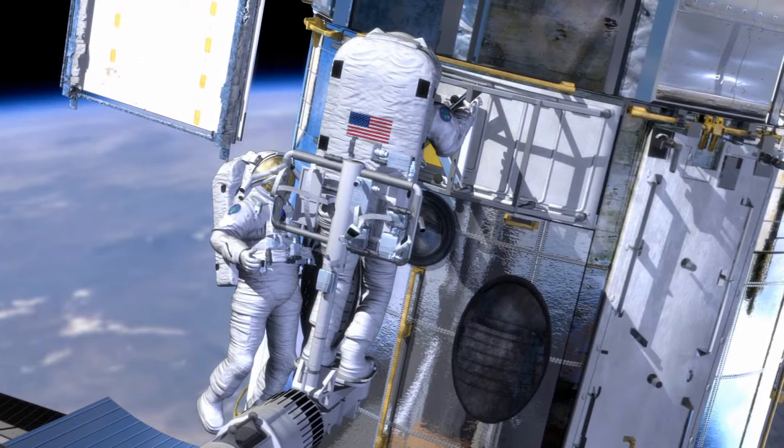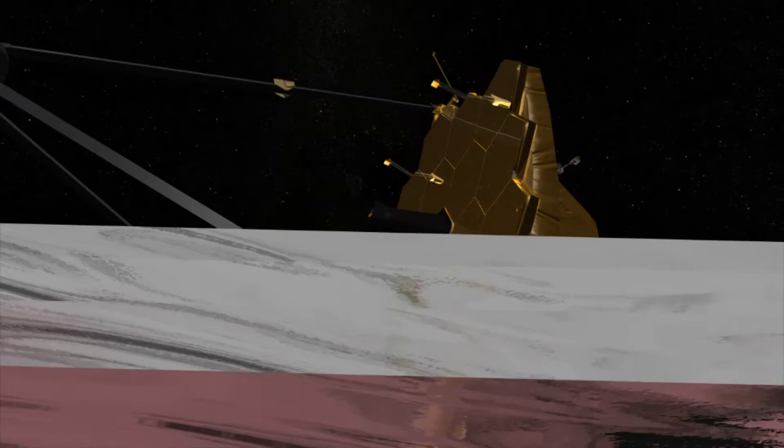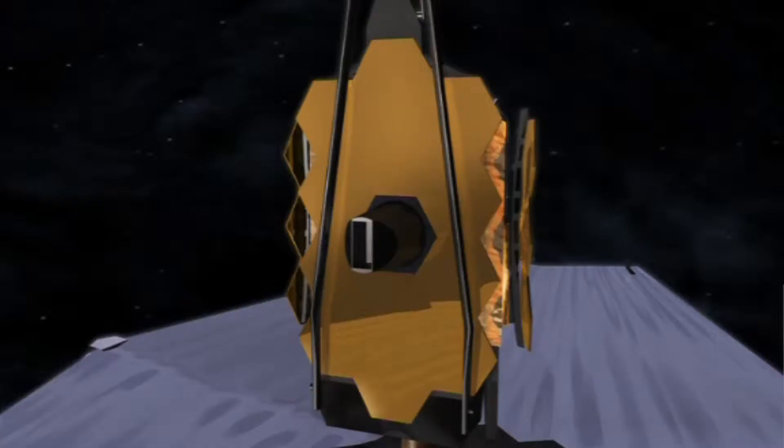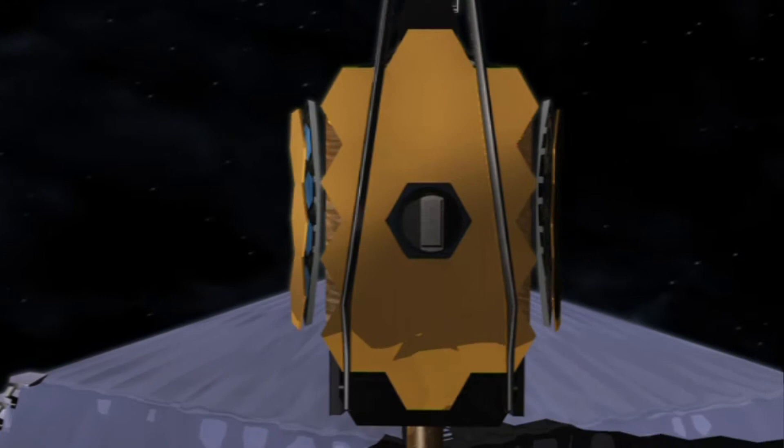Meet the James Webb Space Telescope, a space infrared observatory named after a former NASA administrator. Once in space, its 6.5 meter segmented mirror unfolds like a blooming flower, one seven times as sensitive as Hubble's.